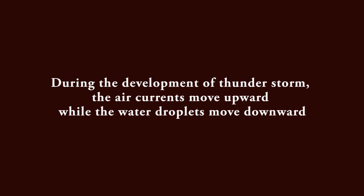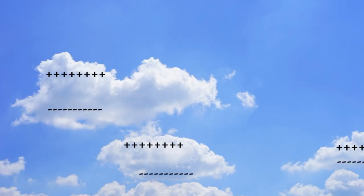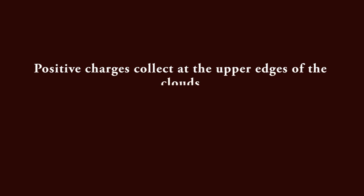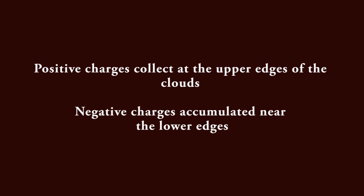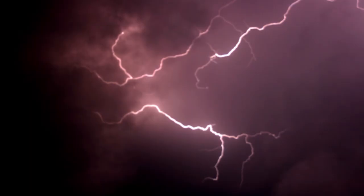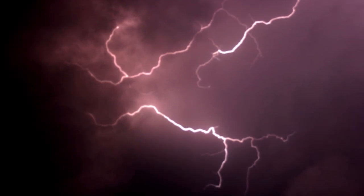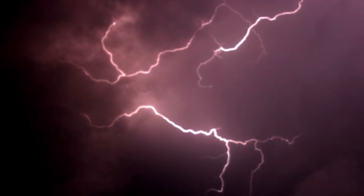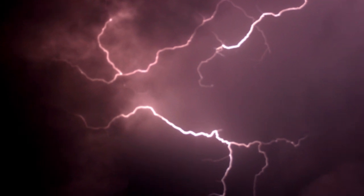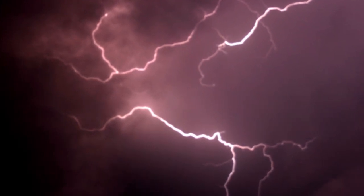The air currents move upward while the water droplets move downward. Due to this vigorous movement, there occurs segregation of charges. Positive charges collect at the upper edges of the clouds and negative charges accumulate near the lower edges. When the magnitude of accumulated charges becomes very large, positive and negative charges meet, producing streaks of bright light and sound. This is called lightning.